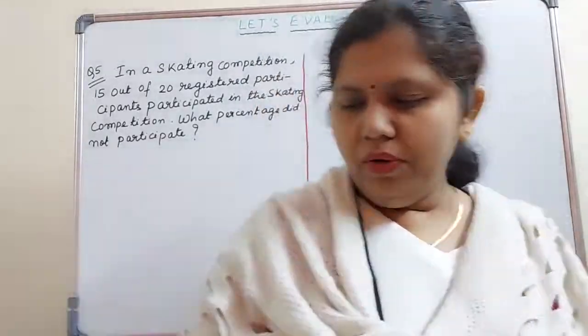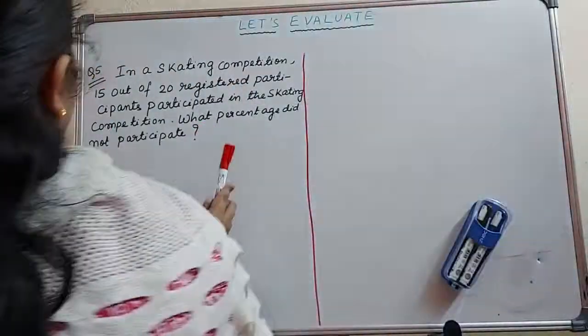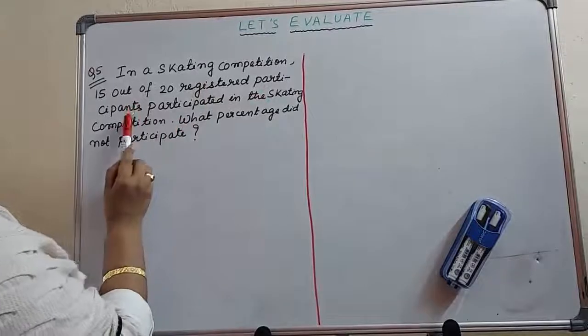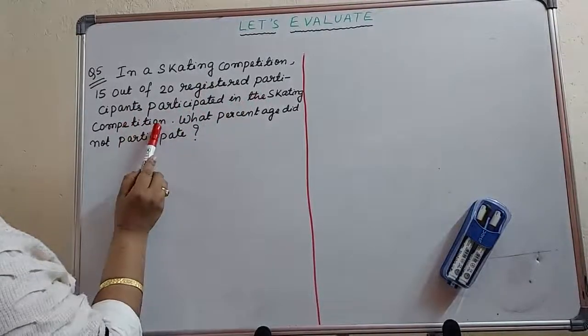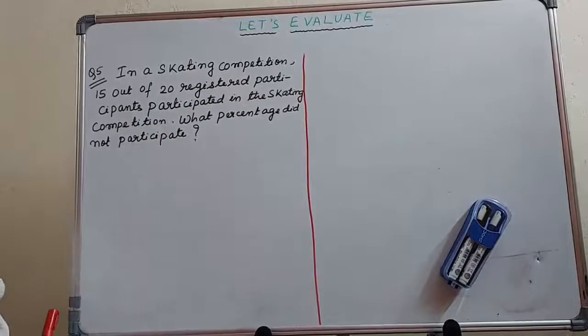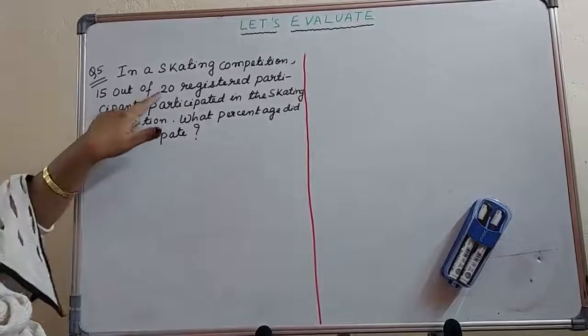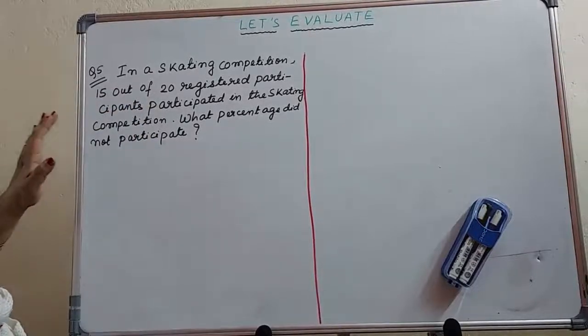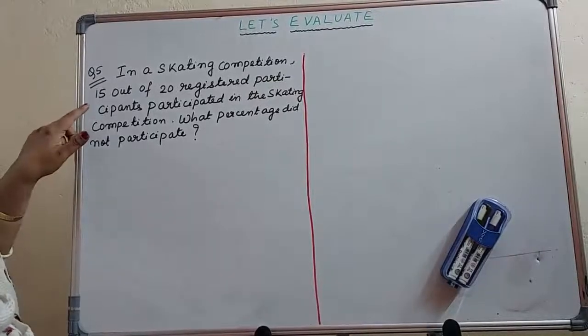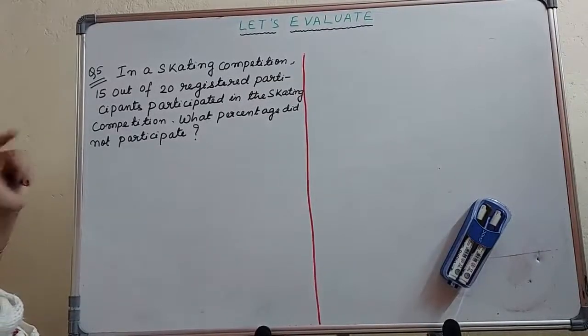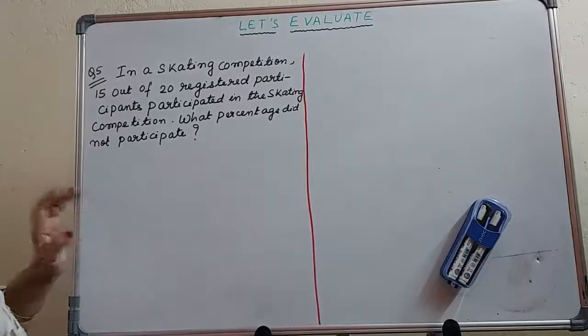Question number 5: In a skating competition, 15 out of 20 registered participants participated in the skating competition. So 15 out of 20 means total number of participants who were registered were 20, but how many participated? That is 15. And next, what percentage did not participate? You have to find out.